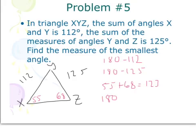So now I know it says find the measure of the smallest angle. So the measure of the smallest angle would be 55 degrees. We always want to make sure that we're answering the question that's being asked. Otherwise, you will lose some points.